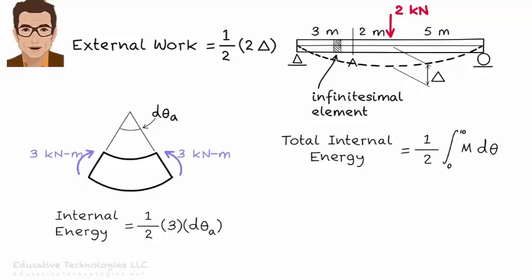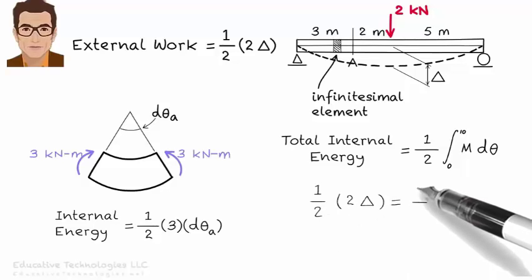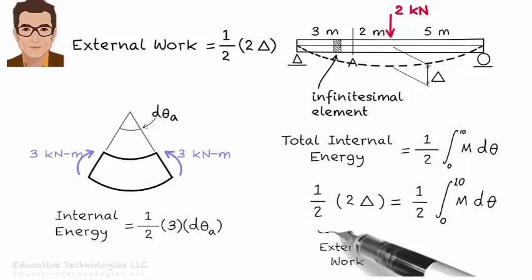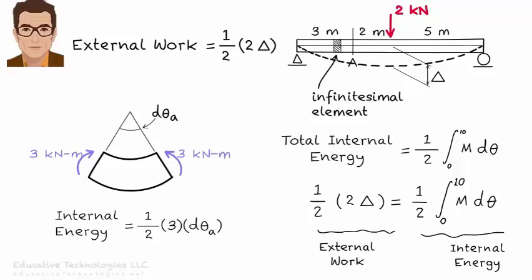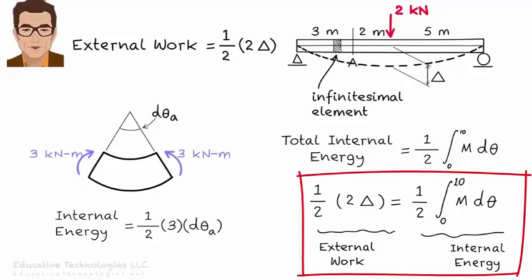The total internal energy is the sum of the energies stored in the individual elements. For our beam, this can be written as an integral. Therefore, for this beam, the work energy principle can be written as an equation. I will come back to this example later when we're ready to perform the integration at the right-hand side of this equation. But for now, let's focus on simpler problems that help us develop a better conceptual understanding of the work energy principle.